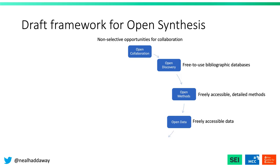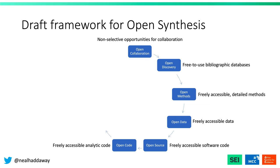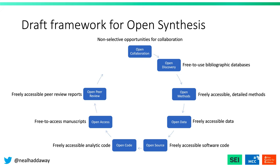Open data — which we're probably all familiar with — refers to freely accessible data. Open source relates to freely accessible software code for any programs developed within a review. Open code relates to freely accessible analytic code within a synthesis or meta-analysis. Open access, which again we're probably all familiar with, relates to freely accessible manuscripts and full texts. Open peer review relates to freely accessible peer review reports.